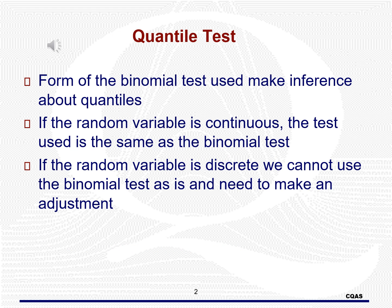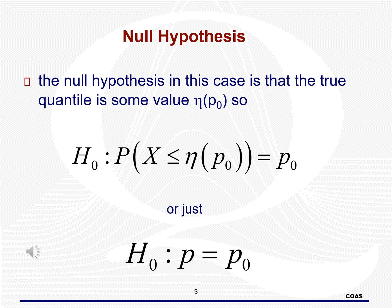A quantile test is a form of the binomial test that we can use to make inference upon percentiles. We will use the binomial test as if the distribution of the data is continuous. If it is discrete, we will still use some form of the binomial test, only we will have to modify. The null hypothesis in this case is that the value in question does indeed have the hypothesized proportion p0 of the data fall below it. This is the same as having the null hypothesis as some proportion equal to some null proportion, which is why we can use the binomial test.